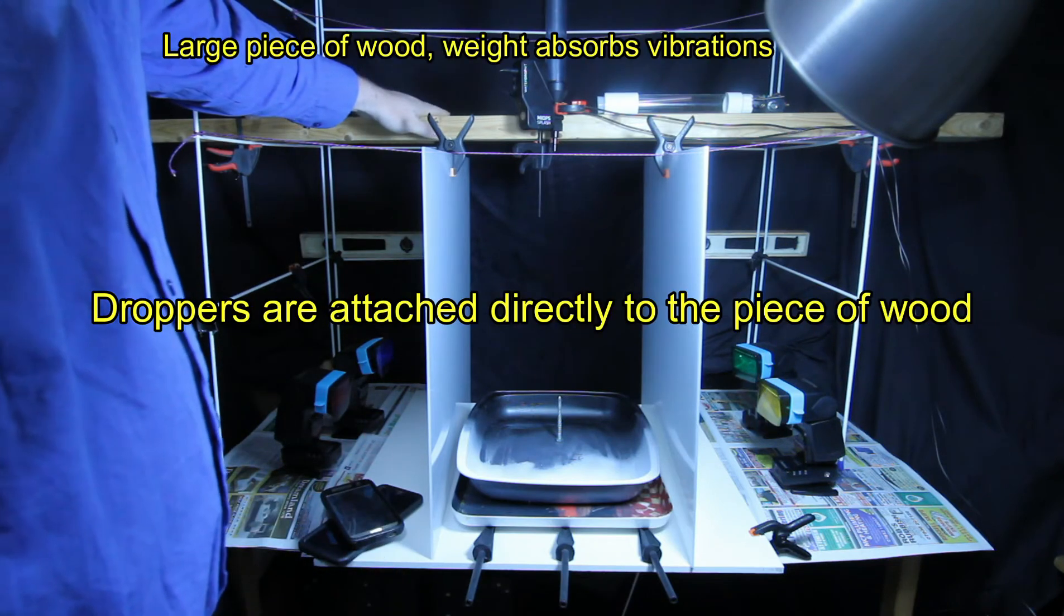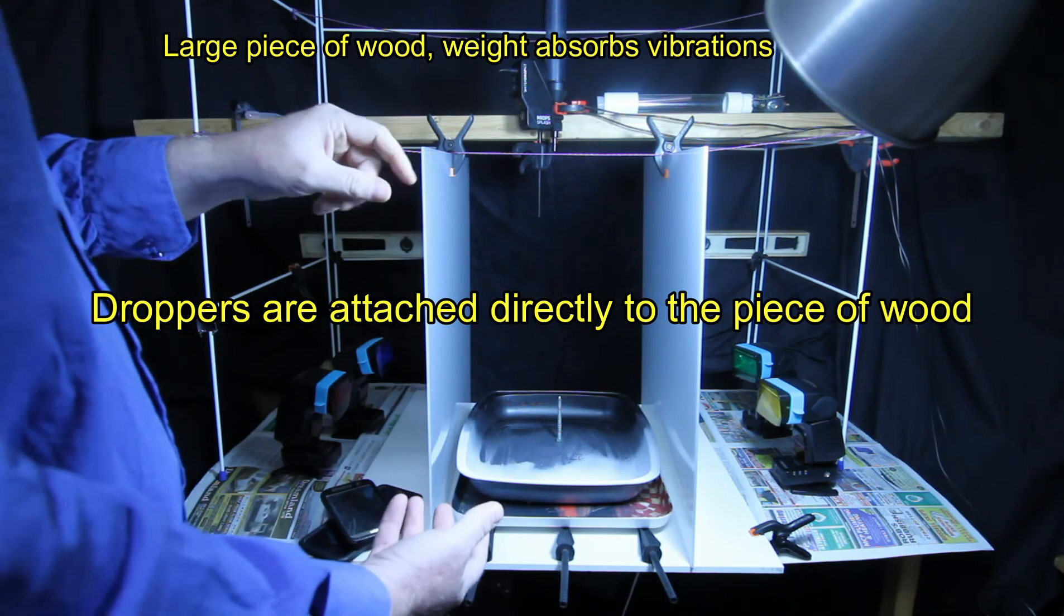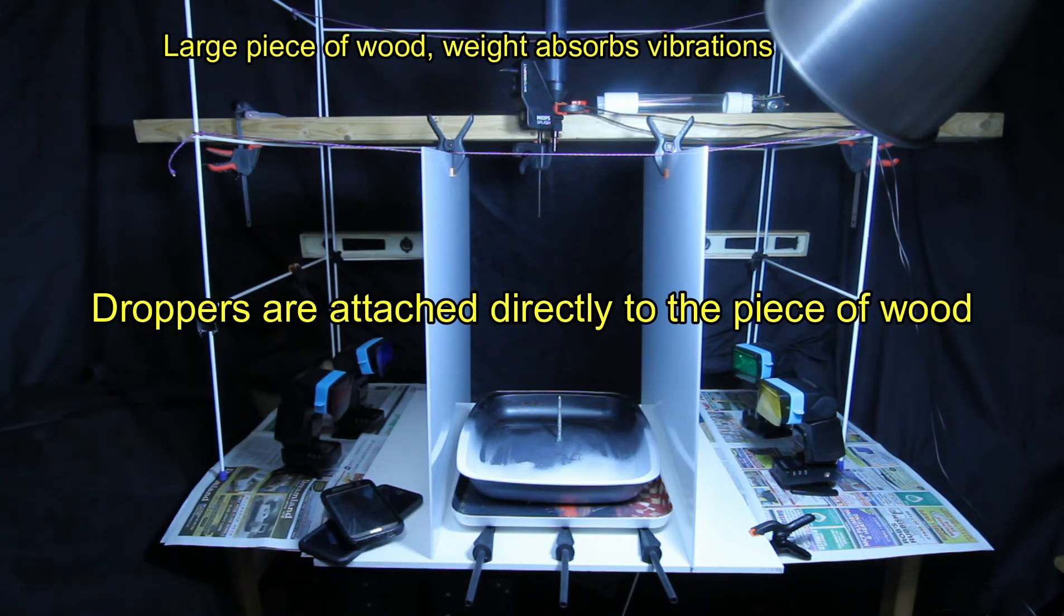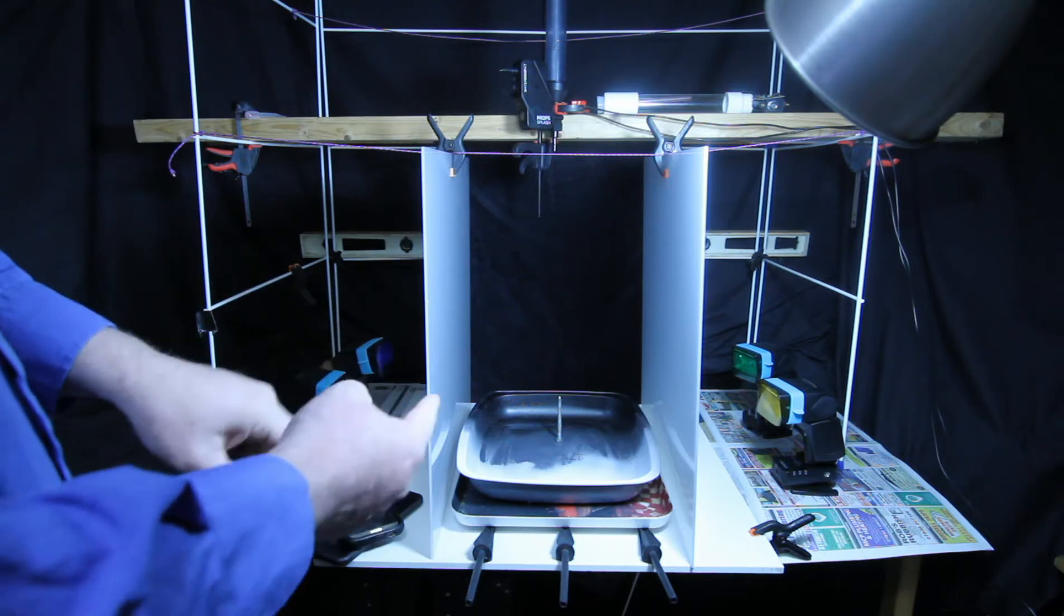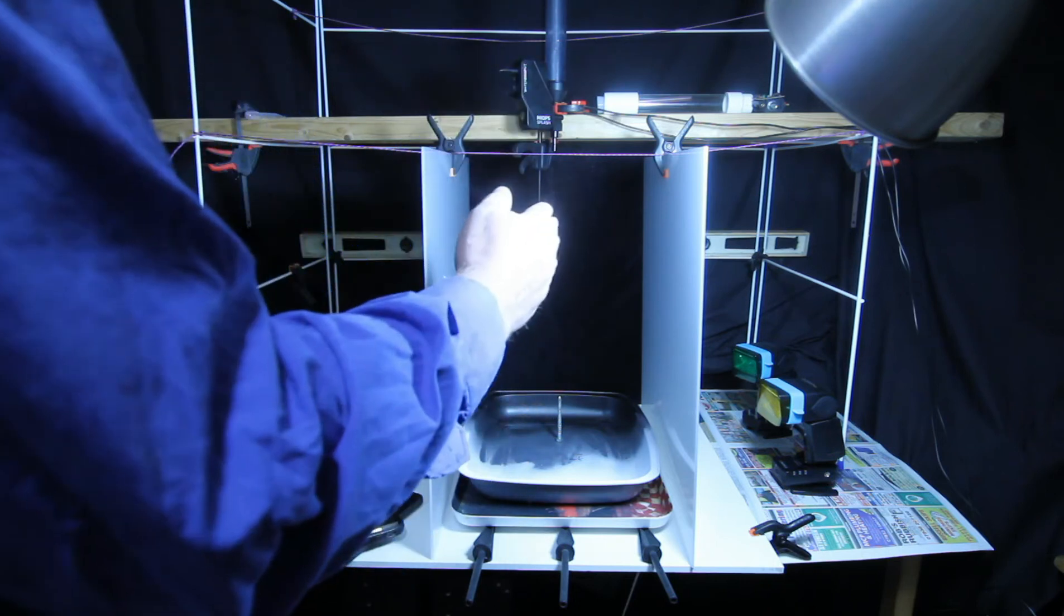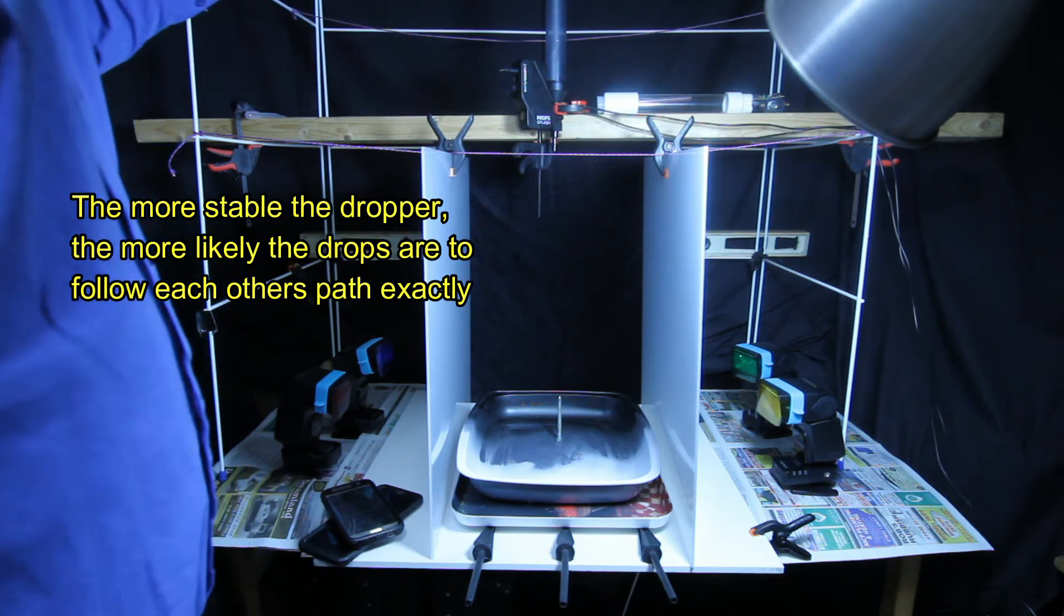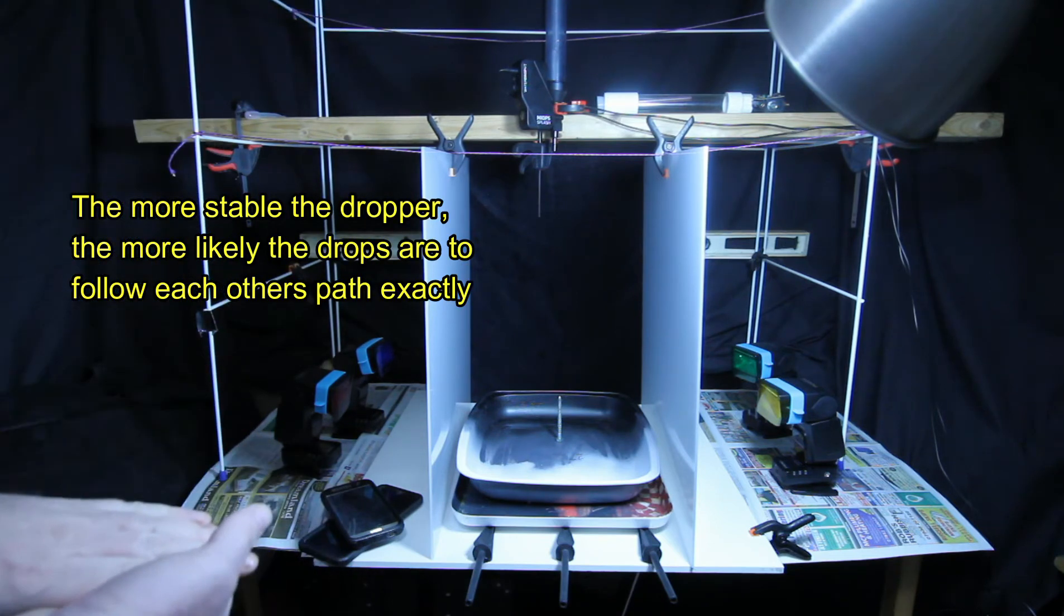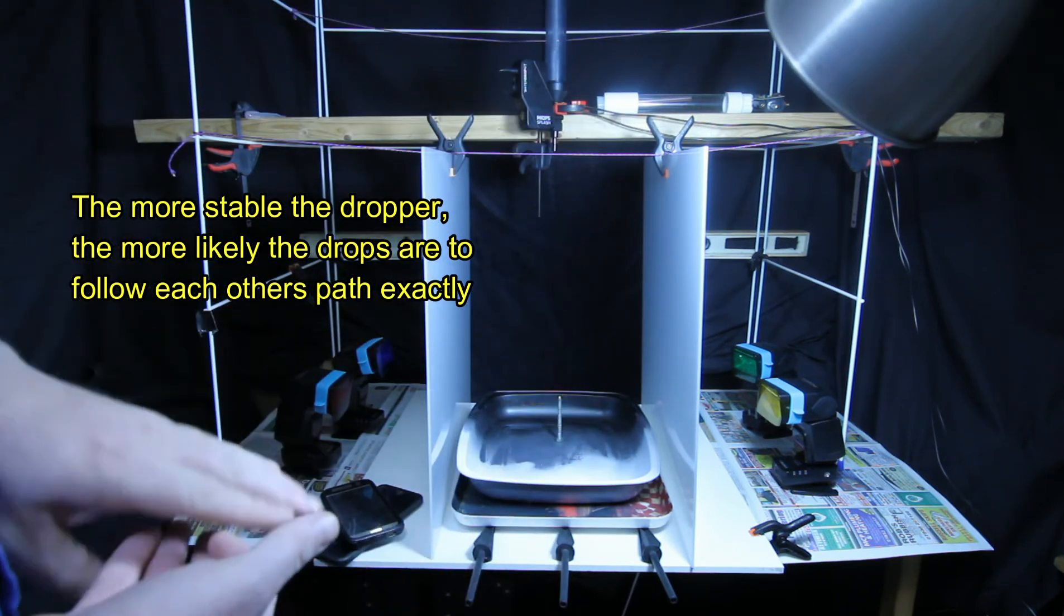Now I've got a chunk of wood at the top here. Now when I'm working higher to get the higher splashes, explosions, collisions. The vibrations from the solenoid opening and closing cause that water drop when it comes down to basically drift. So a big chunk of wood on top helps to absorb those vibrations.